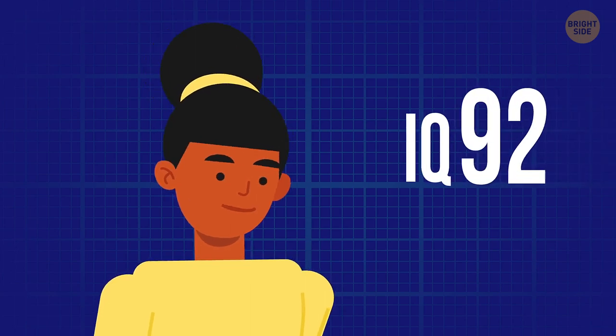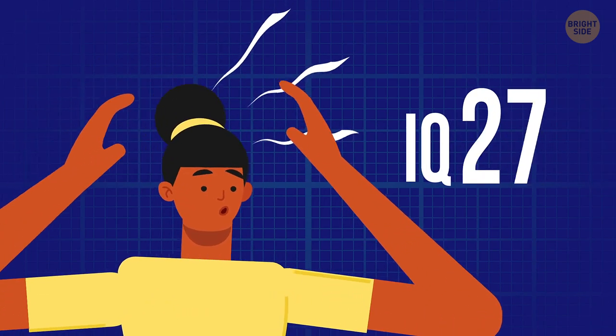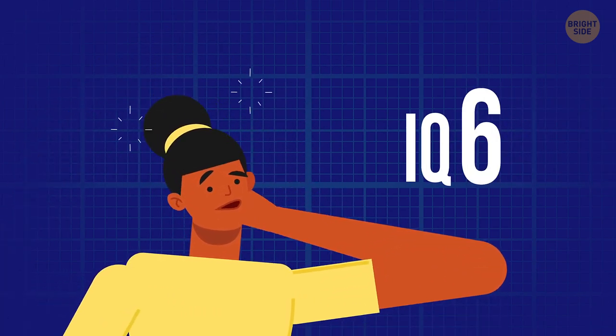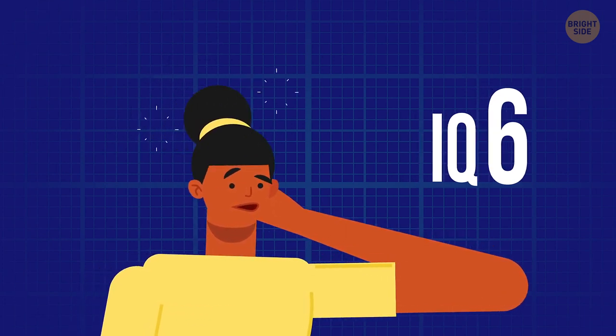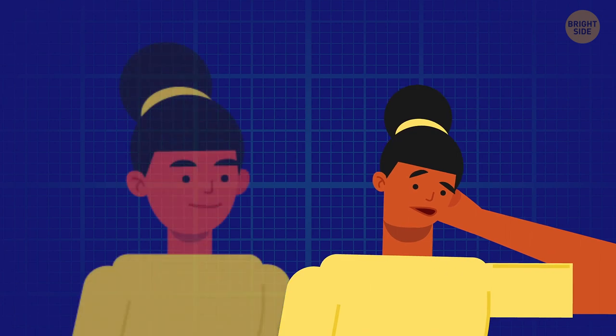People with smaller heads would have smaller brains, and we don't want that. We'd all be stuck with brains about the same size as when we were born. A regular adult's head would be about half its normal size.